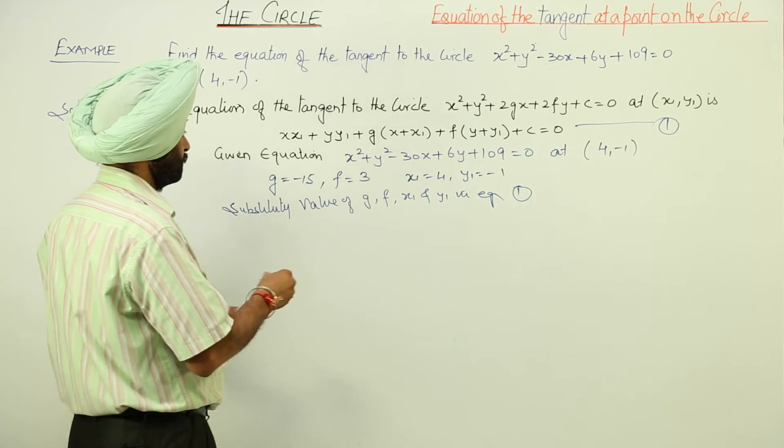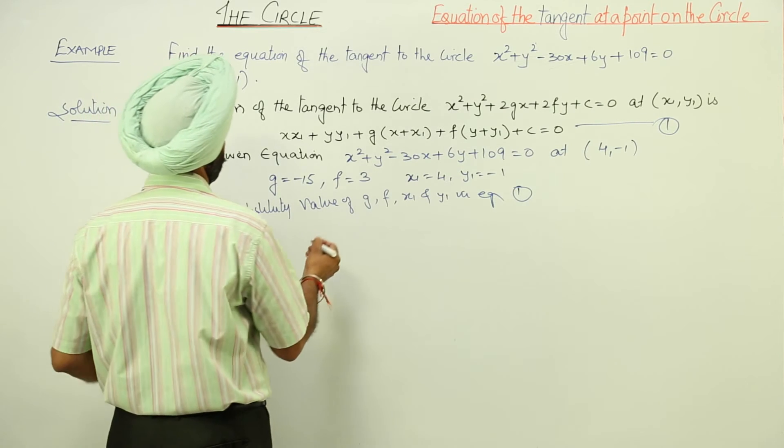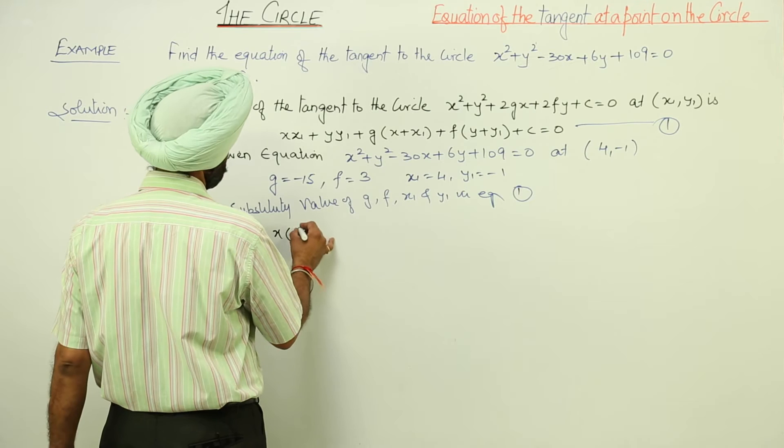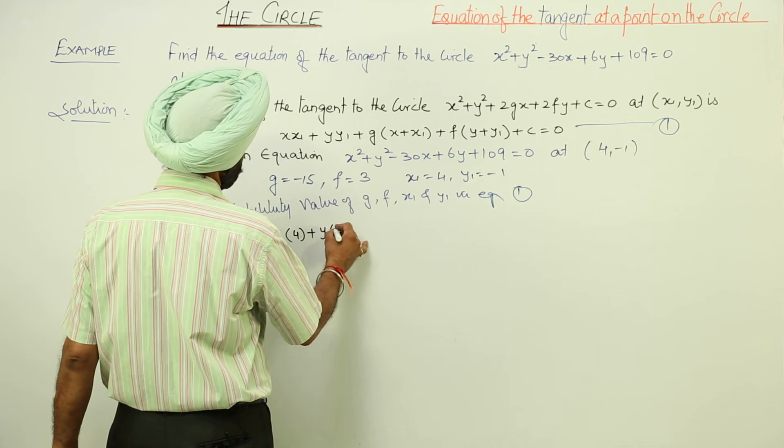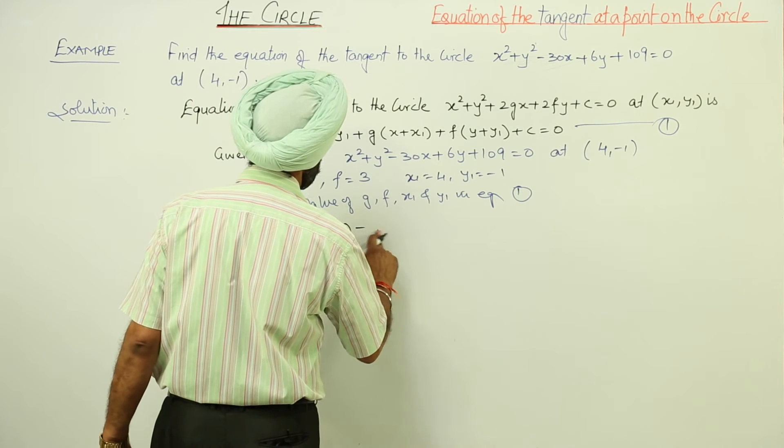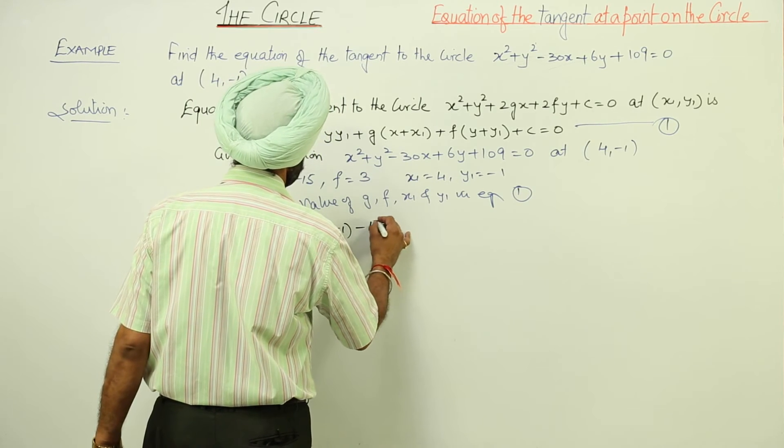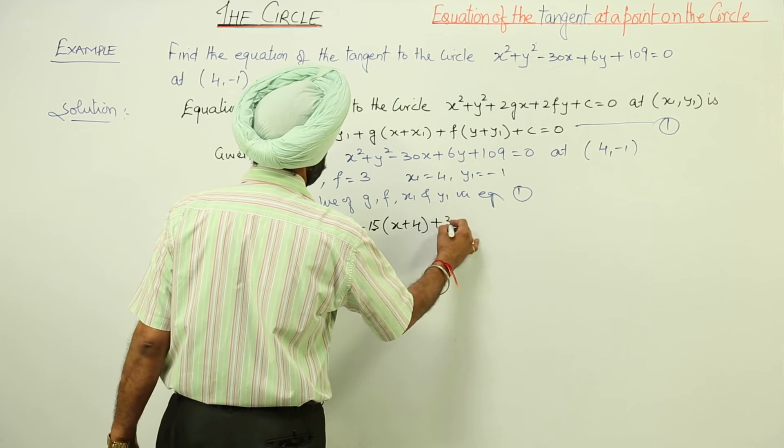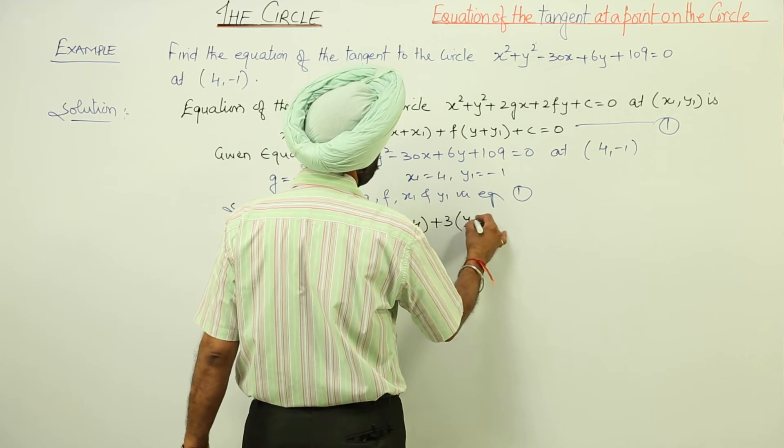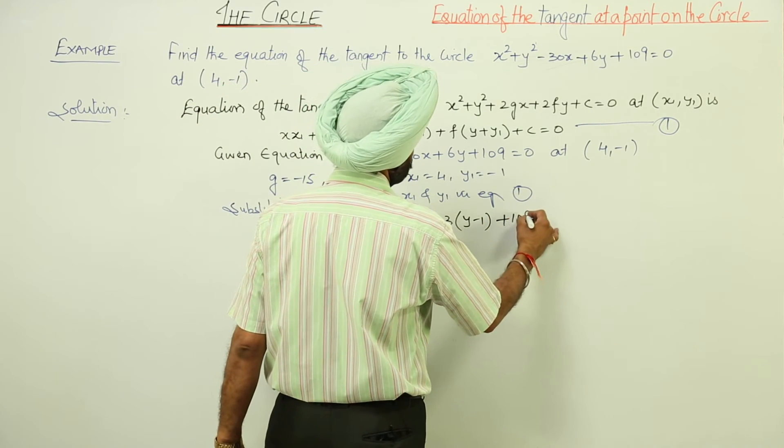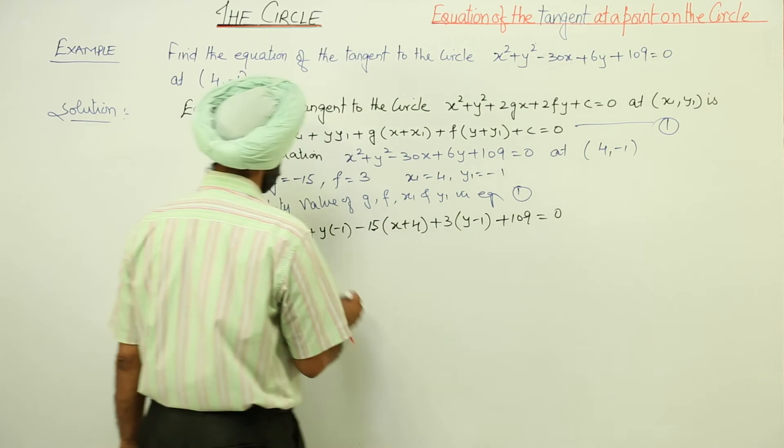What we are having: x(4) + y(-1) - 15(x + 4) + 3(y - 1) + 109 = 0.